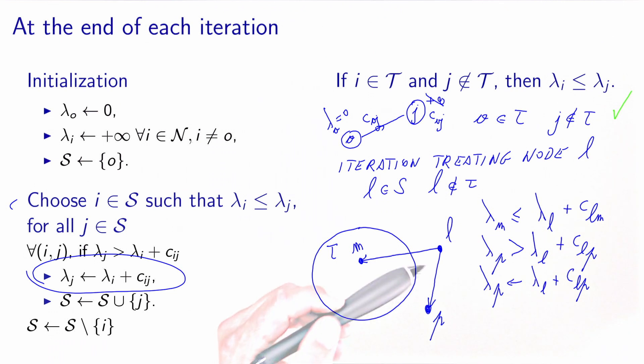So in that case, when we have an arc from a node outside T to a node outside T, either the label is not updated and everything is fine. And if the label is updated, it will be updated to a value which is larger than lambda L, and the property will continue to hold.